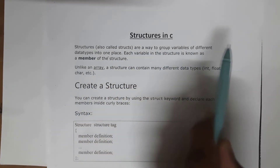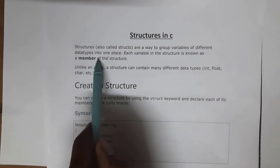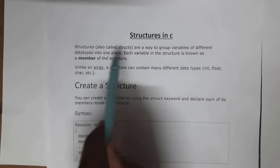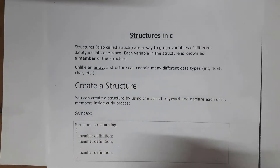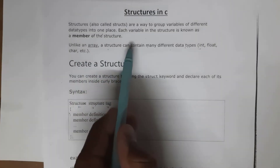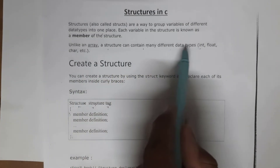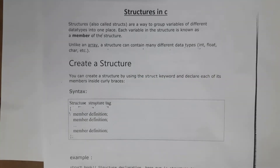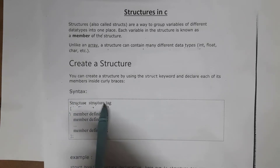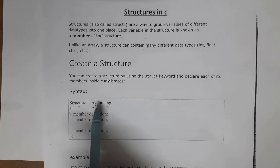If you want to group variables of different data types in one place, then you need to use structures. Structures are a way to group variables of different data types in one place. Each variable in a structure is also known as a member of the structure. Unlike arrays, a structure can contain many different data types.